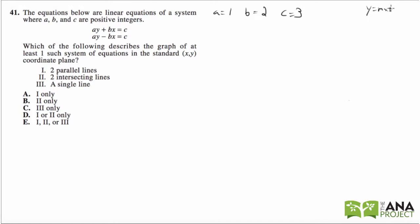So I can punch it into my calculator, and it's easy because if it's 1y then I don't have to divide by anything to isolate the y variable. So ay + bx = c becomes y + 2x = 3, and then I want to solve for y, so I would subtract 2x from both sides. That would be y = -2x + 3.